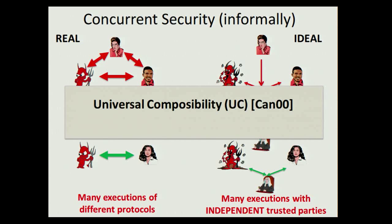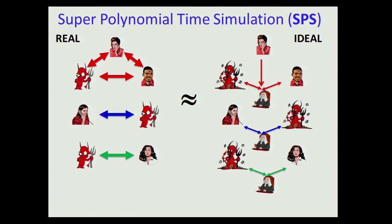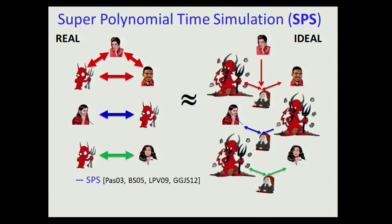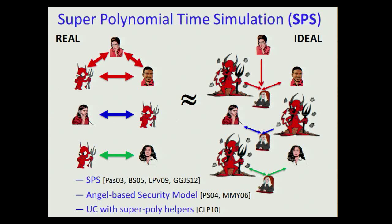Universal composability is most desirable because it puts forward the strongest concurrency requirement. However, because it's so strong, it becomes impossible. In order to get around this impossibility without additional use of trusted infrastructure, many previous works have started to consider a relaxed notion of security called super-polynomial time simulation, where we simply allow the simulator to run a little bit longer. Along the same line, there have been a few works proposing related relaxed security notions with more precise conditions on how much more powerful those simulators can be.